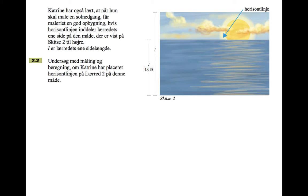Next part. Katrina has also learned that when she has to paint a sunset, the painting gets a good construction if the horizon splits the side of the canvas in the way shown in sketch two to the right. The important information here that a lot of people miss is on the side. So L is the length of the side of the canvas. Then the distance from the bottom up to the horizon is L divided by 1.618. So that will vary depending on what L is, but the basic relationship between where the horizon is proportional to the whole of the picture should stay the same.